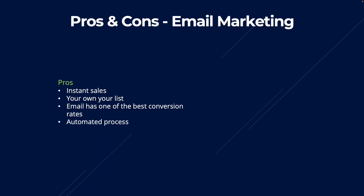The fourth benefit of email marketing is that you can pretty much automate the process. You can create one email template and automatically the email software — such as Mailchimp — will send that email to everyone on your list. You do not have to sit there and send emails one by one manually. It is definitely not a painstaking task.